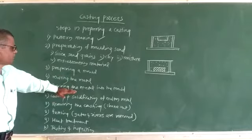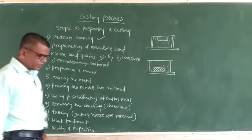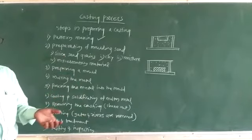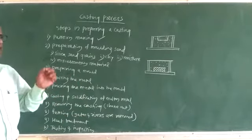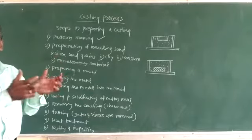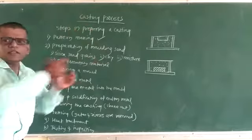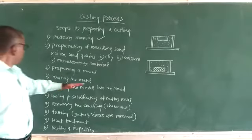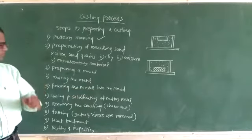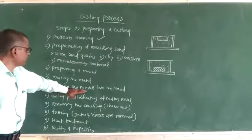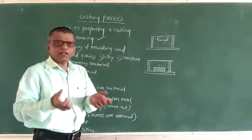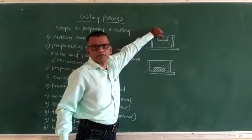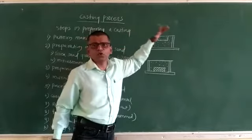The next step is pouring the metal into the mold. The molten metal from the furnace is taken into a ladle. The ladle is equipment used to bring the molten metal from the furnace to the molding area — it is a bucket-type equipment. With the help of the ladle, the molten metal is poured into the cavity of the desired shape, that is, into the mold.